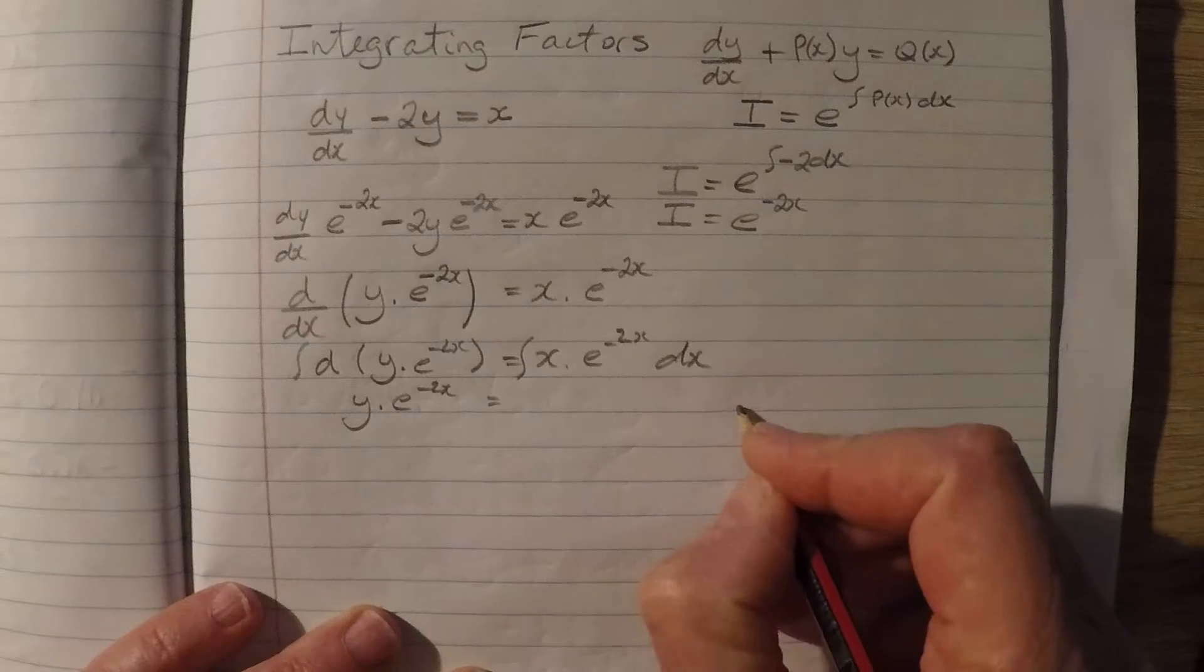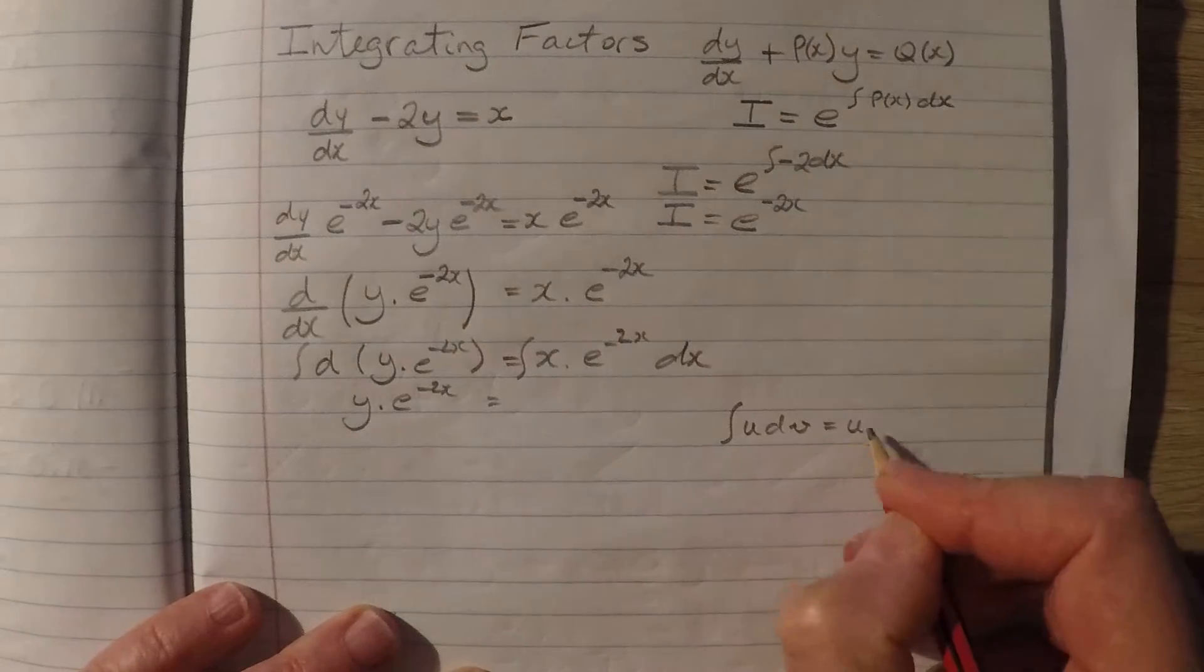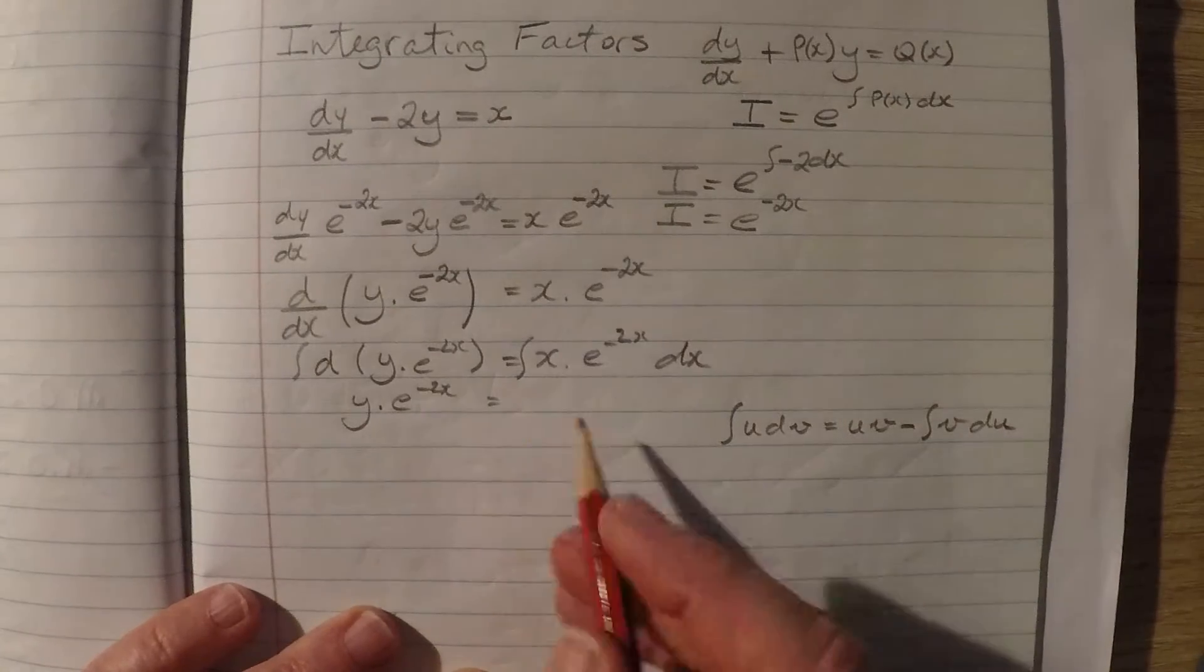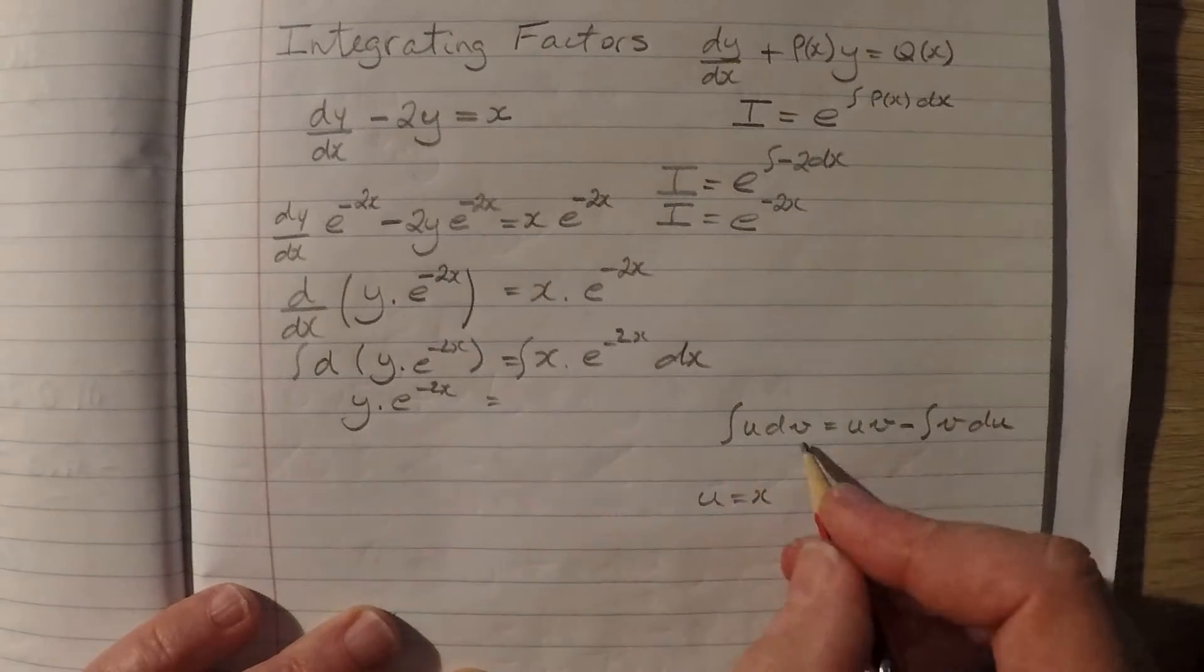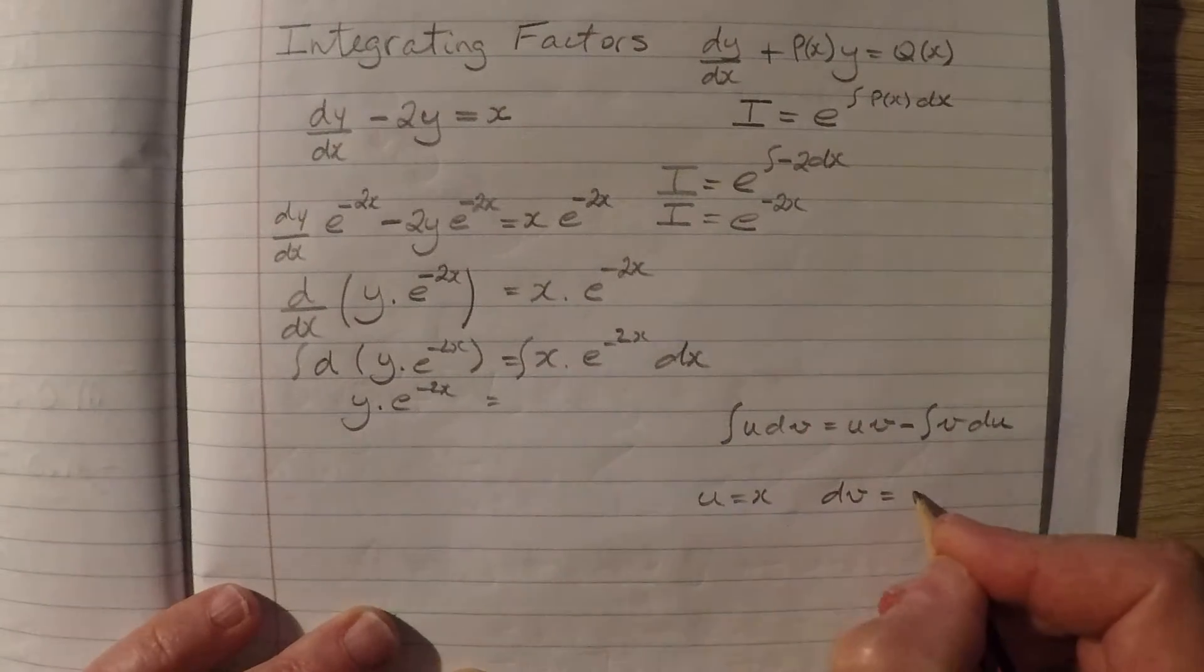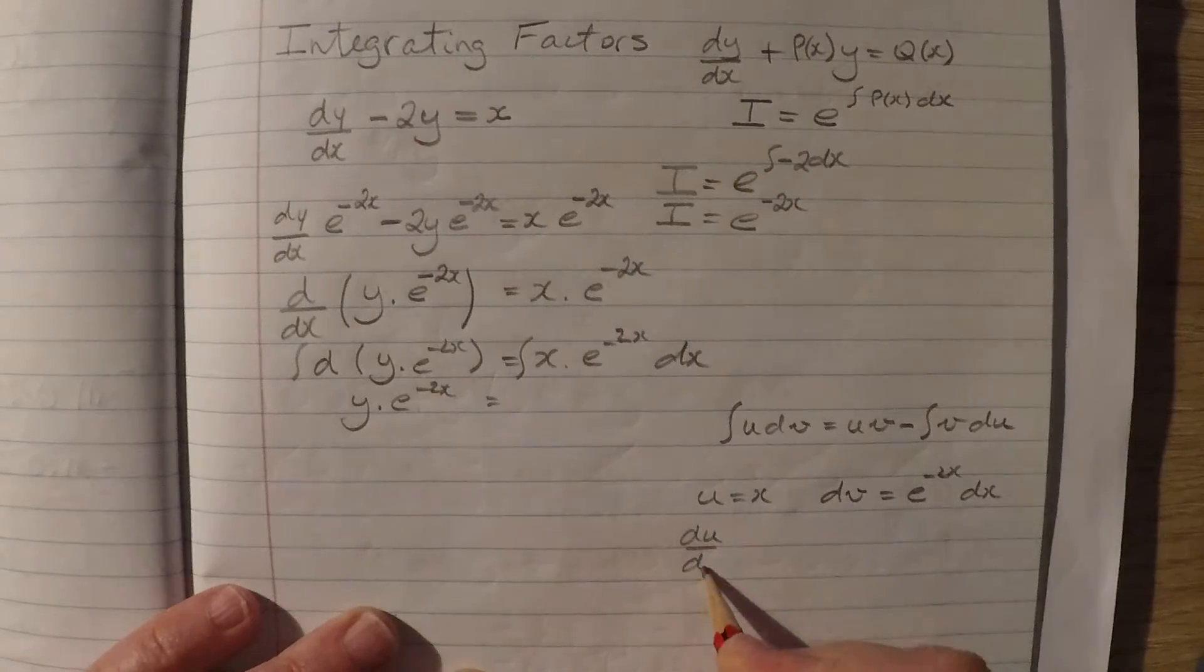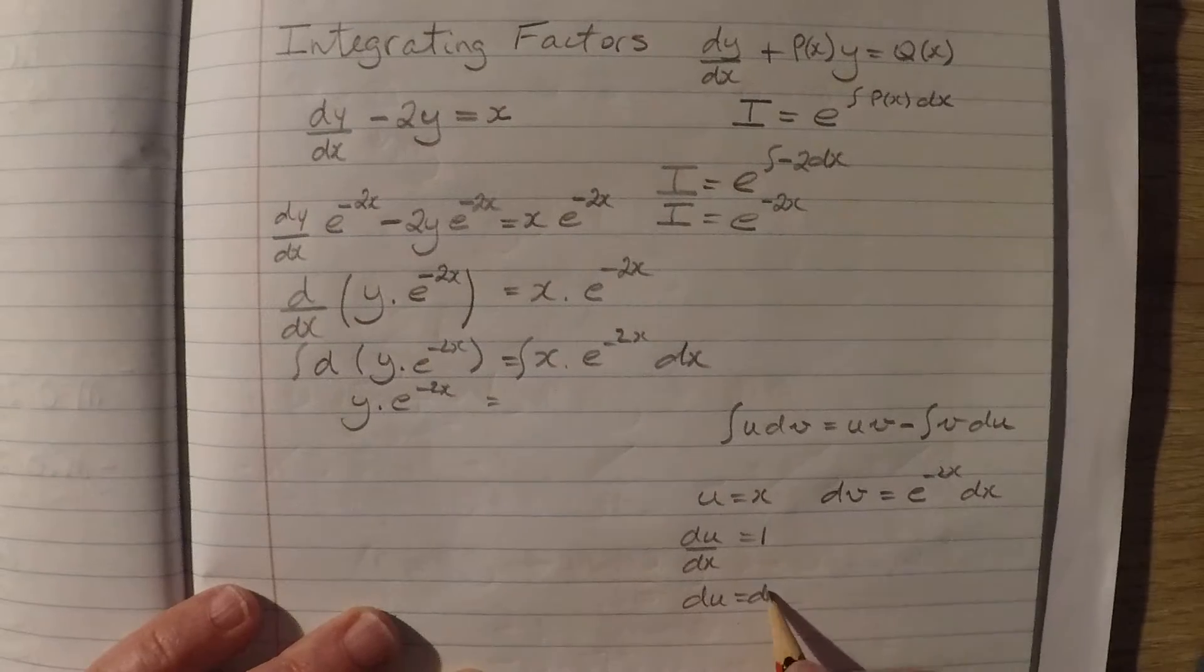I'll remind everyone that the integral of u dv equals u times v minus the integral of v du. So looking at this expression here, I'm going to say that u equals x and dv equals e to the negative 2x dx. The derivative du over dx would equal 1. This leads directly to du equals dx.